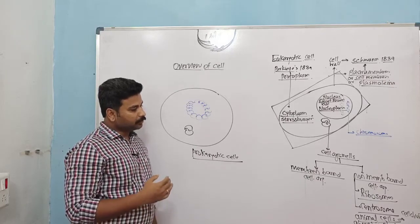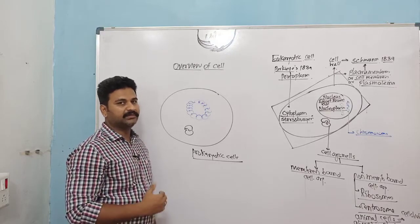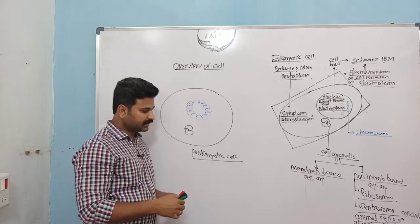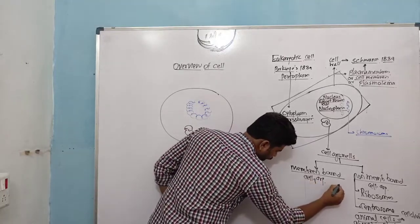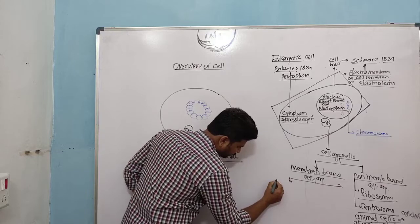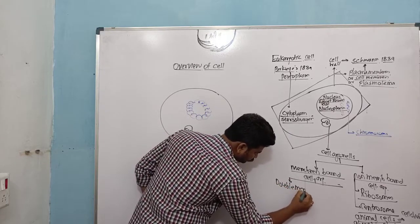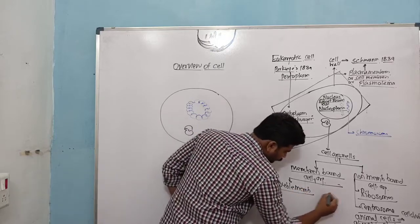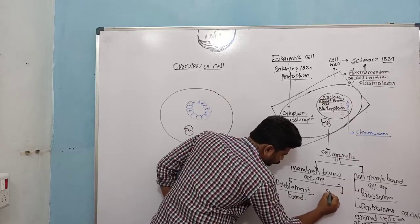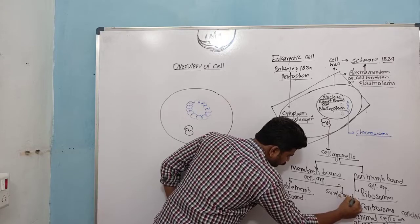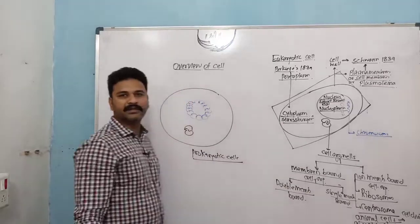Membrane-bound cell organelles are of two types: those having a double membrane and those having only a single membrane.